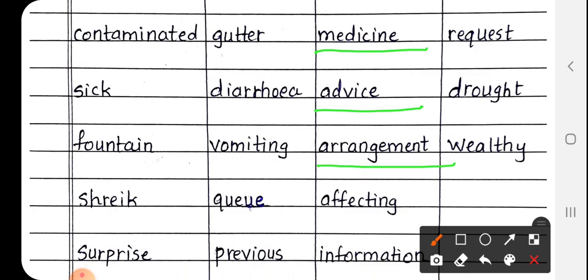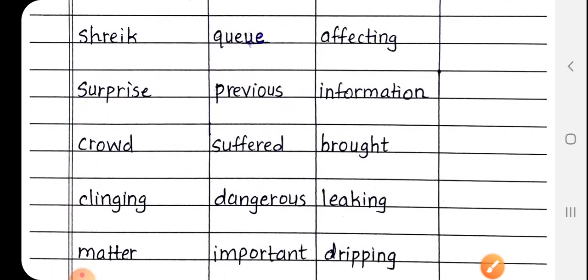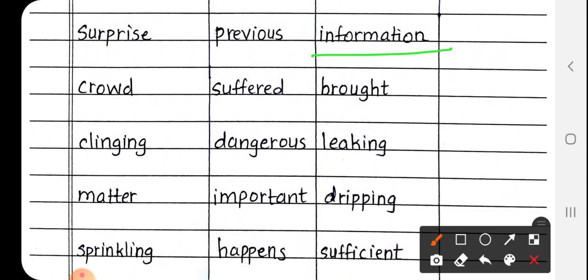Next is arrangement, A-R-R-A-N-G-E-M-E-N-T. Arrangement matlab vyavastha. Next is affecting, A-F-F-E-C-T-I-N-G. Affecting matlab prabhavit kar raha hai. Next is information, I-N-F-O-R-M-A-T-I-O-N. Information matlab suchna.